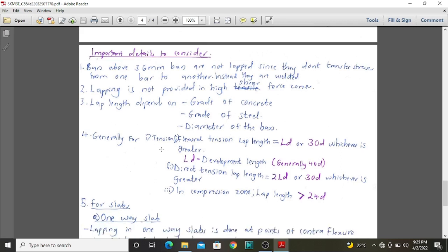Generally, for tension, we need a 30D or L over D, whichever is greater. L over D is the development length as highlighted in the design codes. And generally, L over D can be taken as 40D, but it also needs to be determined as shown in the code.